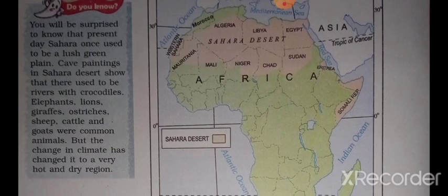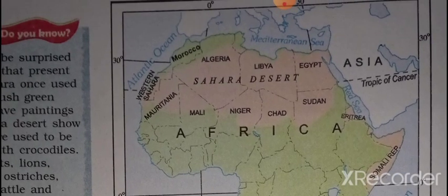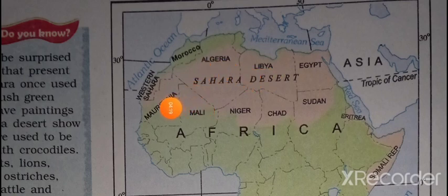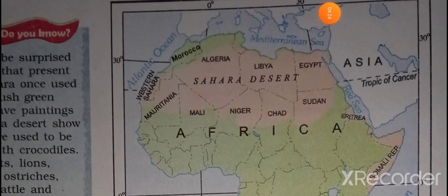Here you can see the Sahara desert on the map. It has touched 11 countries and the countries' names are visible — you can see Sudan, Egypt, Libya, Algeria, Mauritania, and Western Sahara. This is the entire Sahara desert.